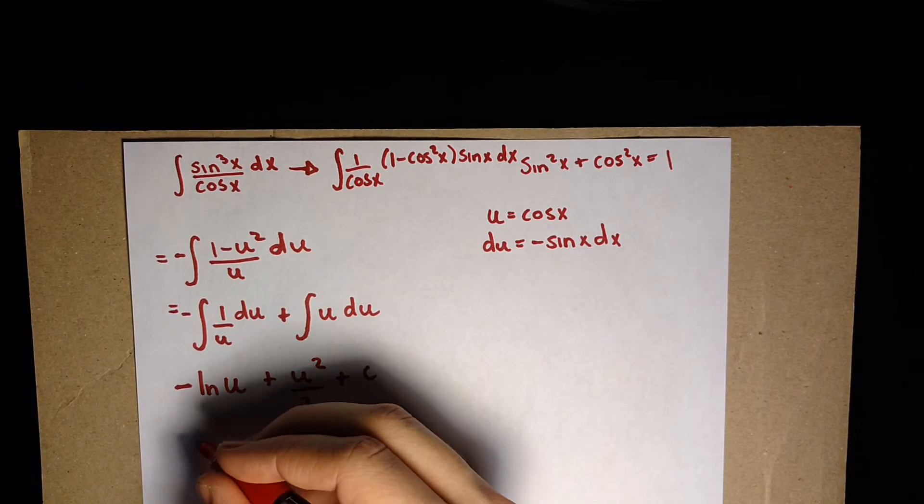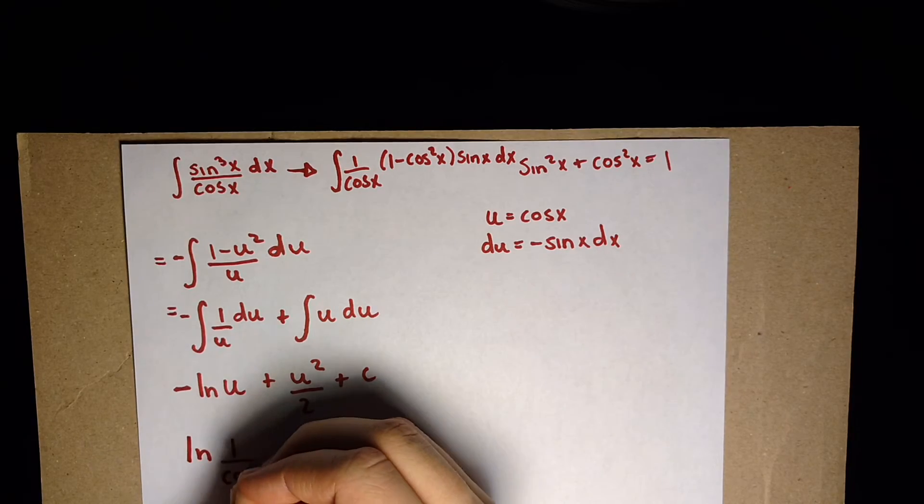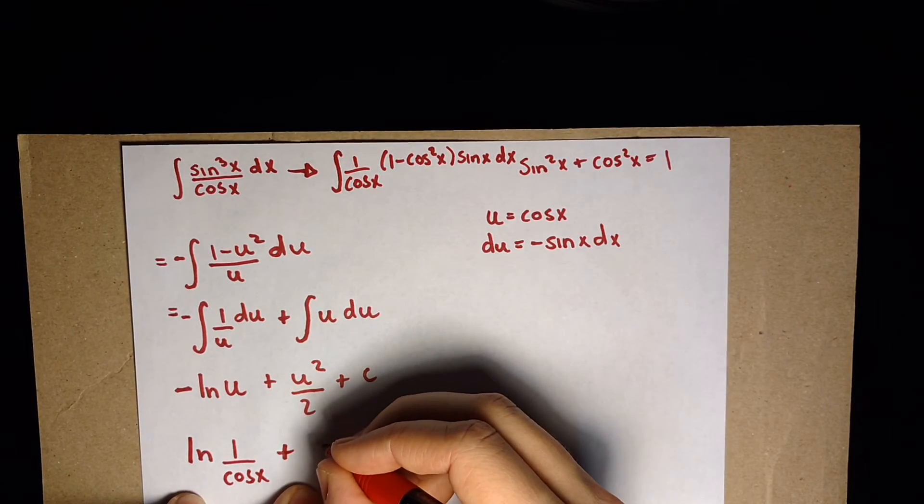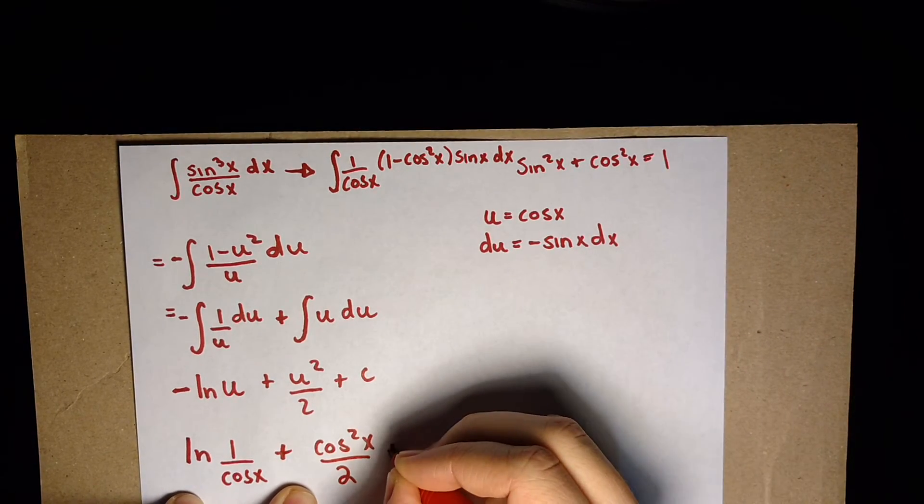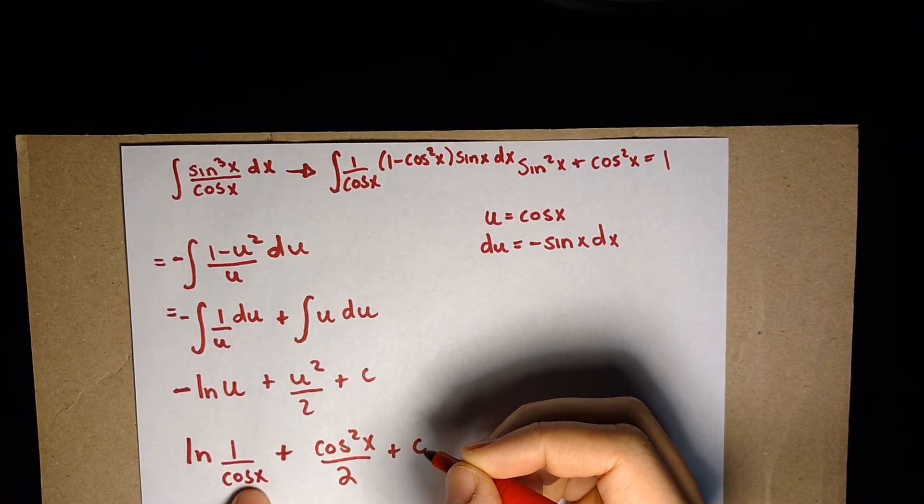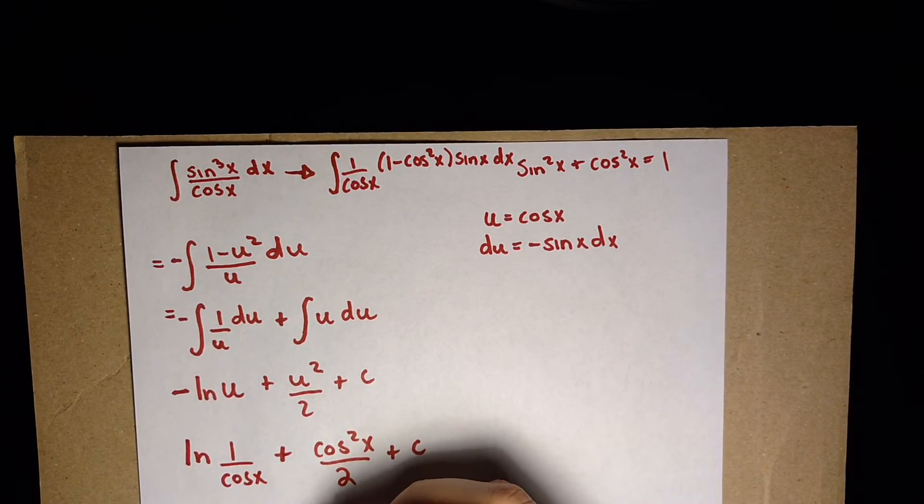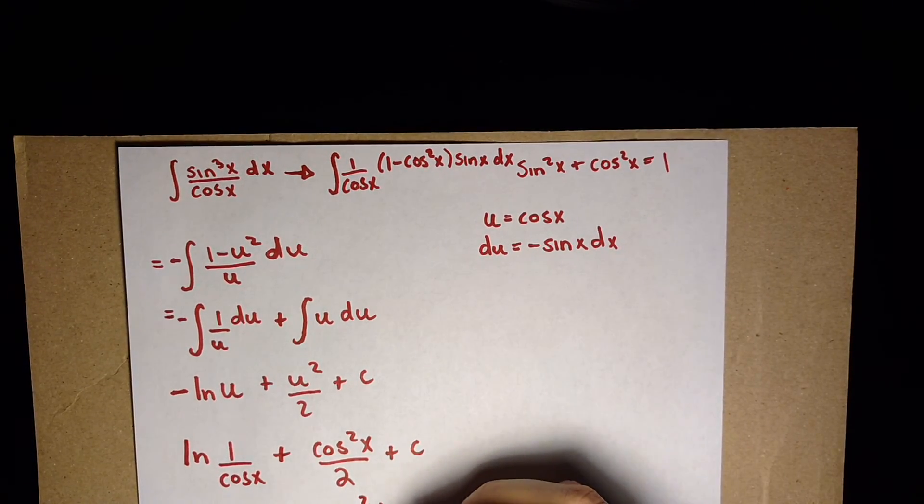We have ln of 1 over cosine of x plus cosine squared x over 2 plus c. And we know 1 over cosine of x is just secant of x, so we've got ln of secant x plus cosine squared x over 2 plus c.